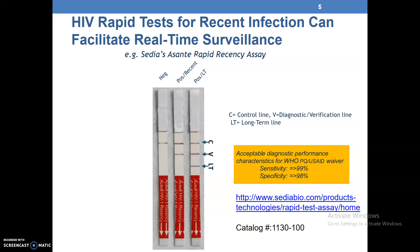The results include: negative with a control line only, positive recent with a control line and a verification line, and positive long-term. Acceptable diagnostic performance characteristics for WHO PQ and USAID waiver require sensitivity equal to or greater than 99 percent, and specificity equal to or greater than 98 percent. There is a website we can check for CEPHEID.